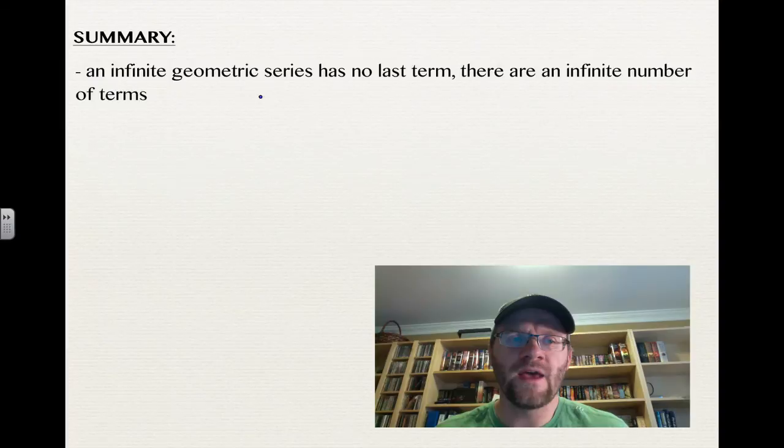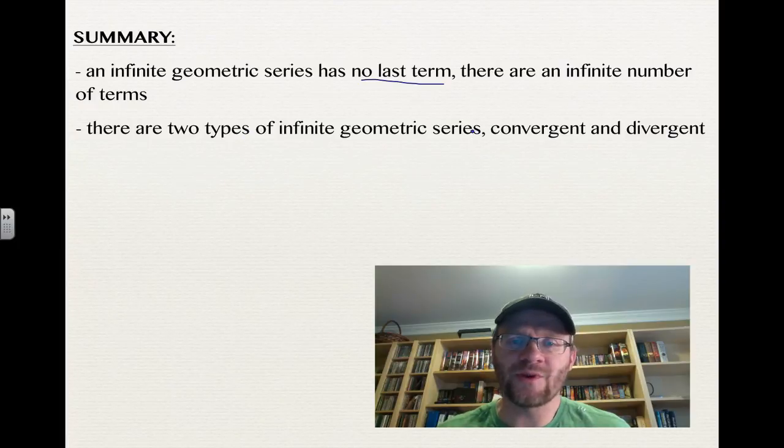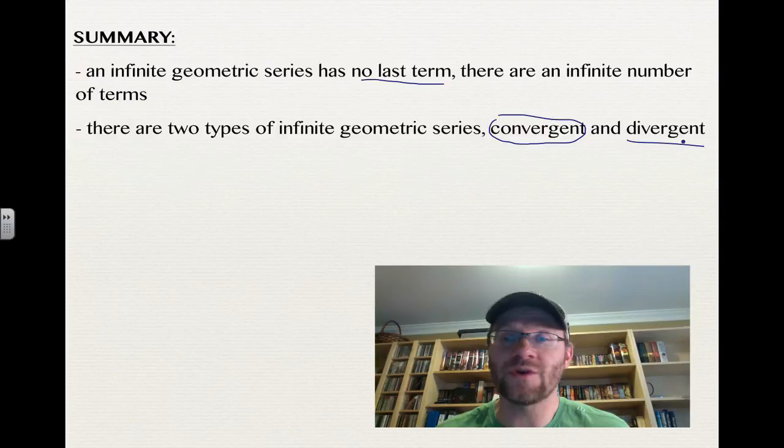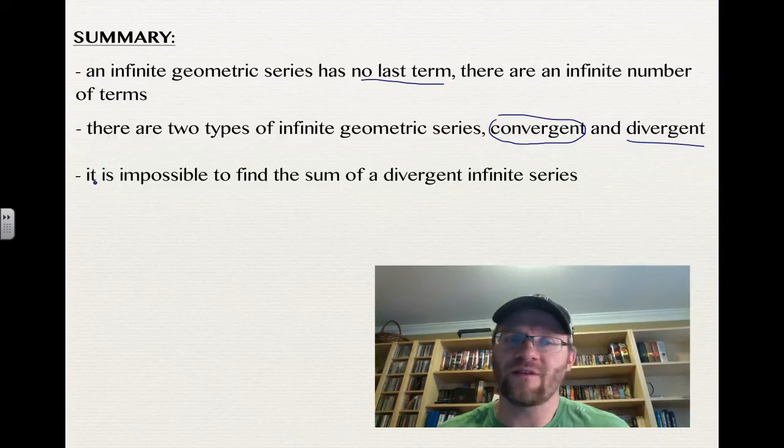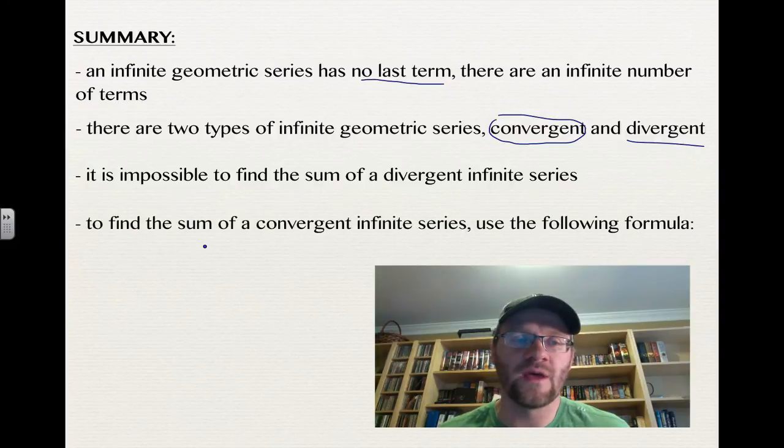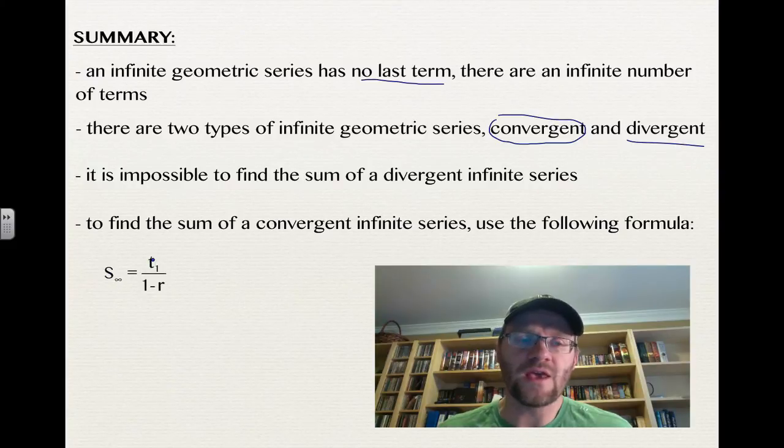In summary, an infinite geometric series has no last term, which means there are an infinite number of terms. There are two different types of infinite geometric series, a convergent one which you can actually find the sum of, and a divergent one which you cannot. It is impossible to find the sum of a divergent infinite series. To find the sum of a convergent infinite series, we use the formula S infinity equals your first term divided by 1 minus r.